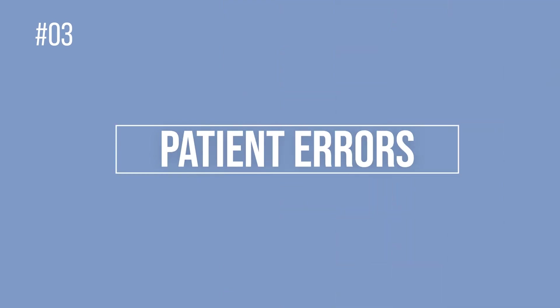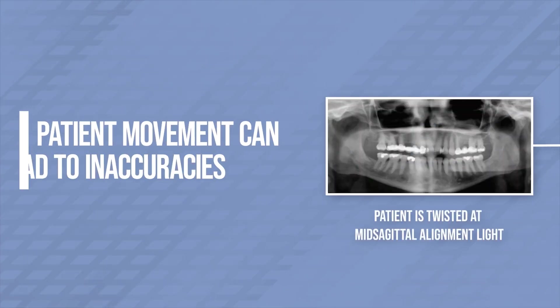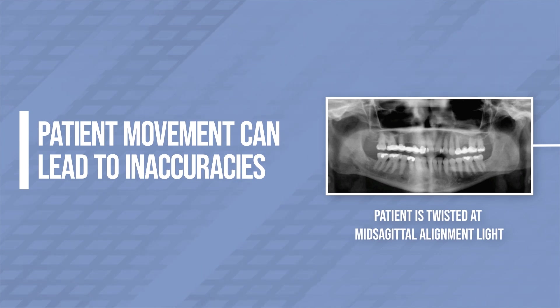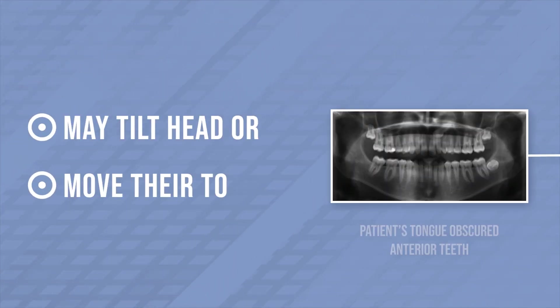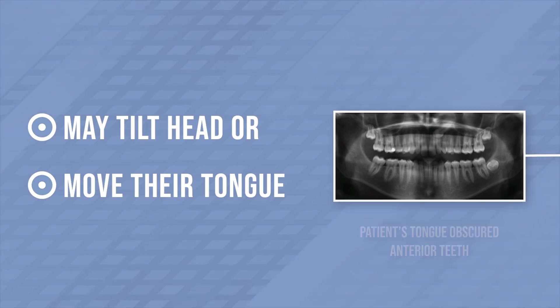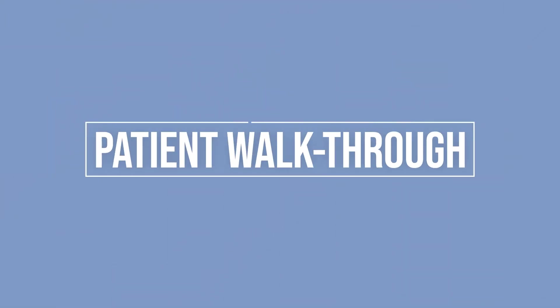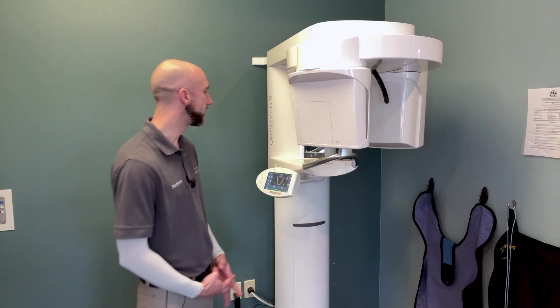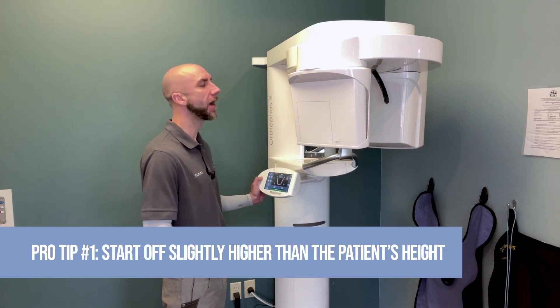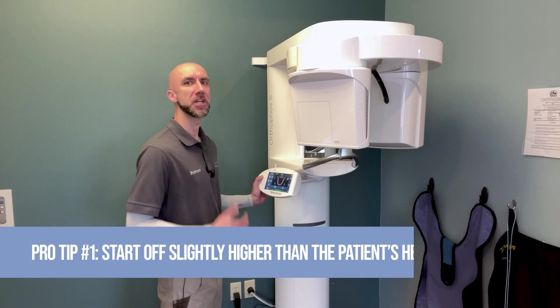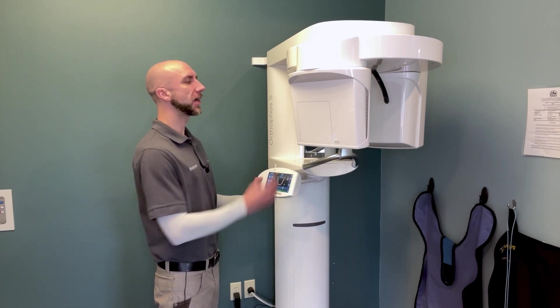The final component comes down to your patient. You may have the machine set up perfectly and the patient positioned just right, but as soon as you're taking the image the patient may move — causing anatomy on one side to appear larger than the other, a slight head tilt, or tongue movement — all of which affect image quality. When preparing your machine, start off slightly higher than the patient's height. This will make the patient stand up taller, stretching out their neck to reach up to the bite stick, which is the first step in eliminating spinal compression.